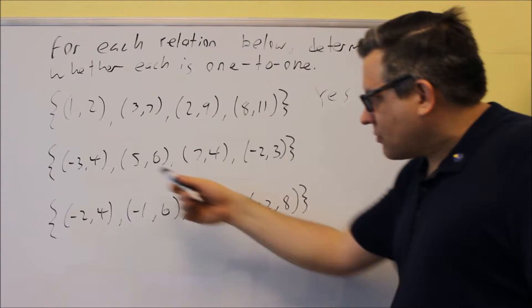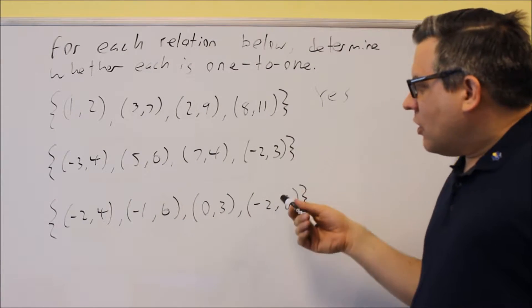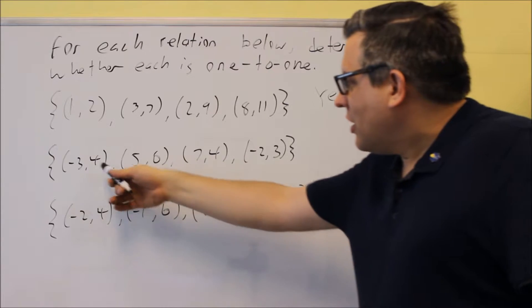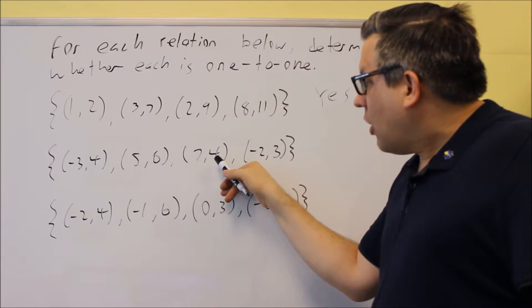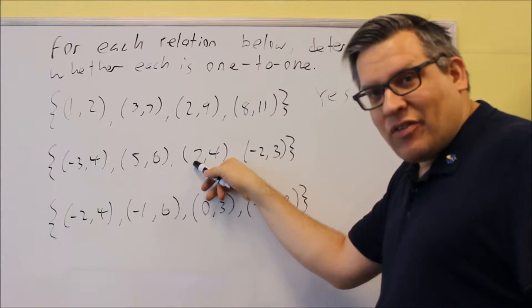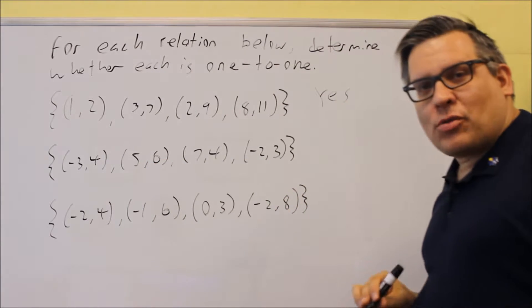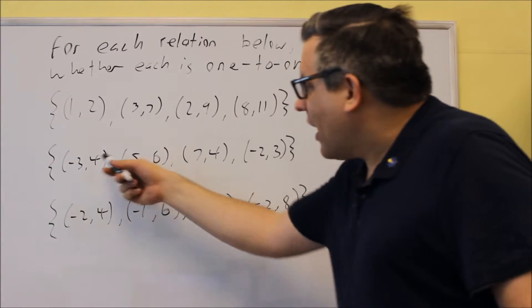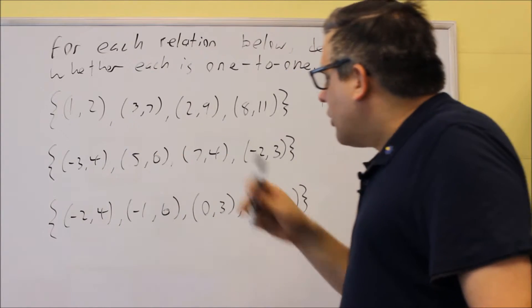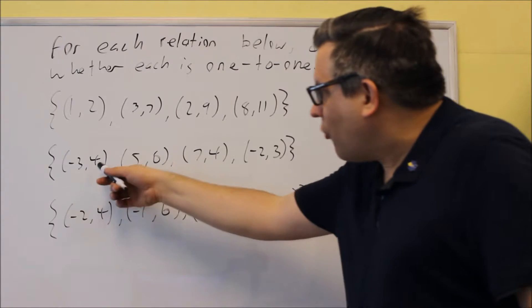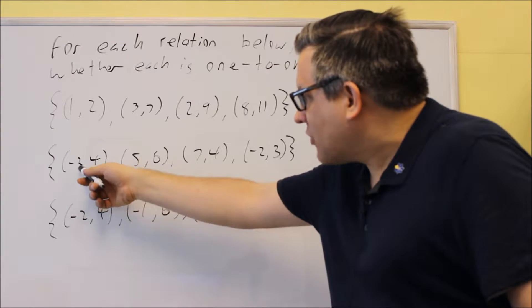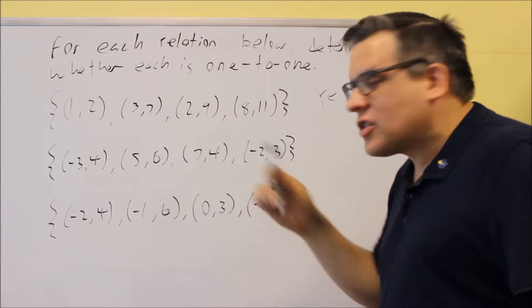Next, this one here. We notice that we have a y value of 4 goes to negative 3, a y value of 4 goes to 7. So this is an example of a case where we have the single y value goes to two different x values: 4 goes to an x value of negative 3, and 4 here goes to an x value of 7.